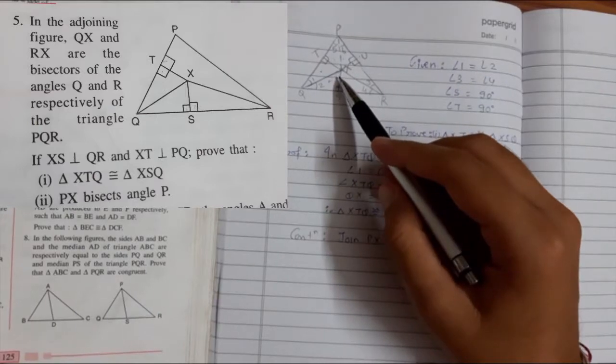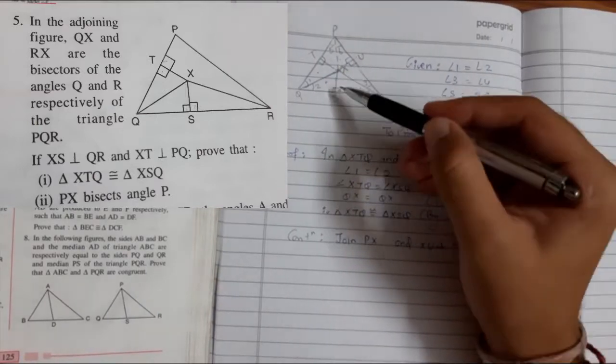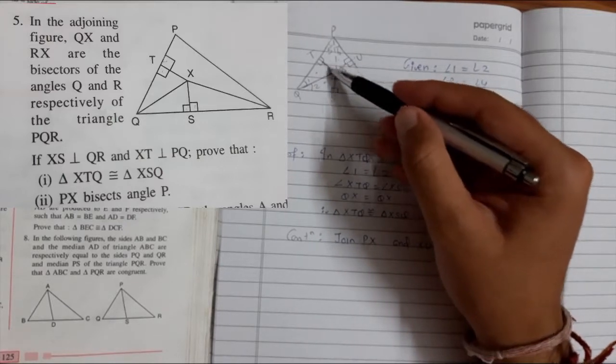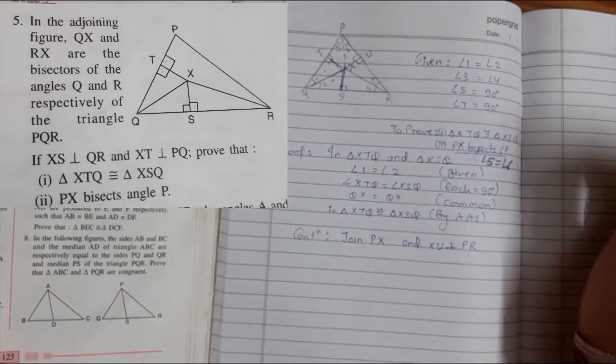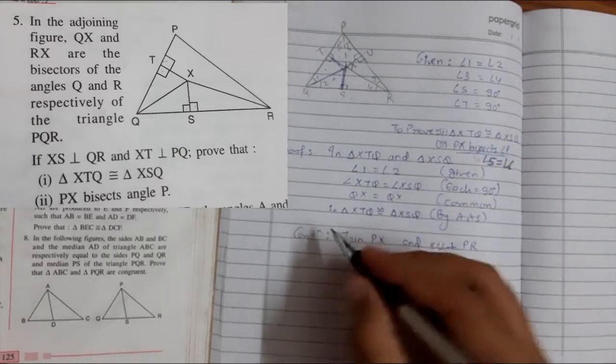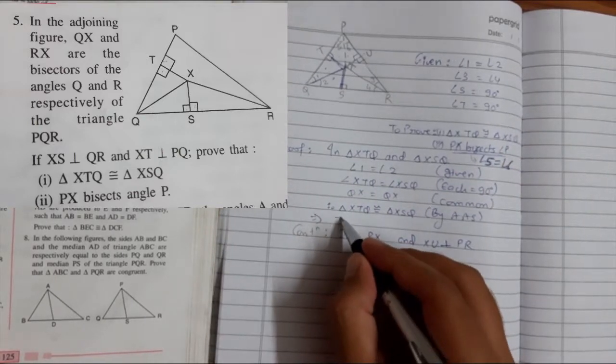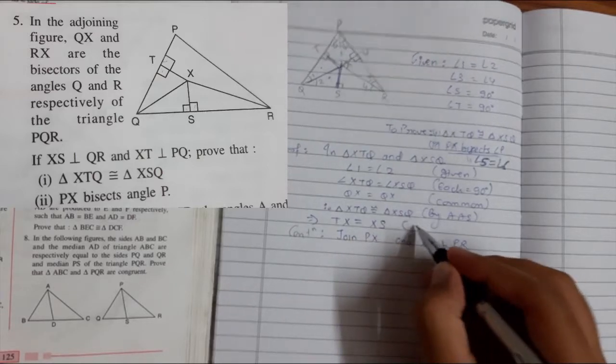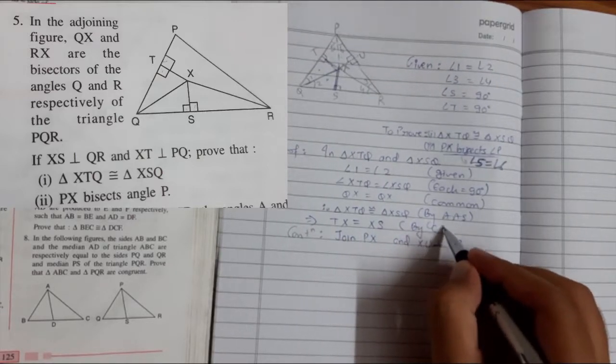By the congruency of the previous part, we can say this is equals to this by CPCTC. Let's write that. TX is equals to XS by CPCTC.